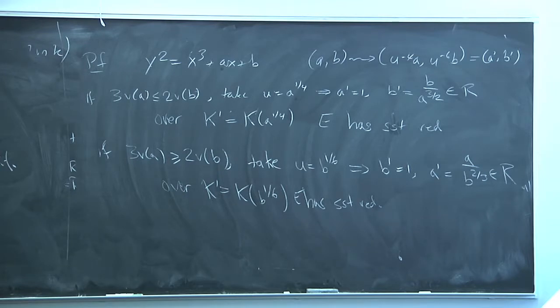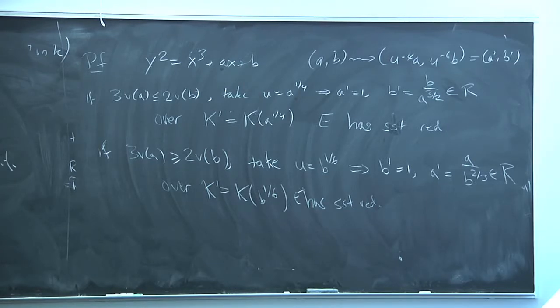These explicit arguments with Weierstrass equations are much harder in characteristic 2 or 3, where the form of the Weierstrass equations is more complicated. That's why I made the simplifying assumption — to make these proofs easy.